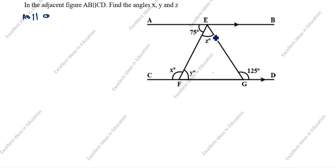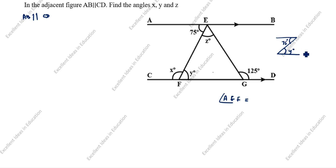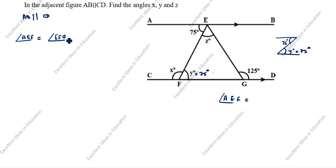Looking at this drawing, angle AEF equals this angle — they are the same. Why? This is the alternate interior angle. So 75 degrees here means this is also 75 degrees. Angle AEF is equal to angle EFG. EFG equals 75 degrees. So angle EFG, or Y, is equal to 75 degrees.